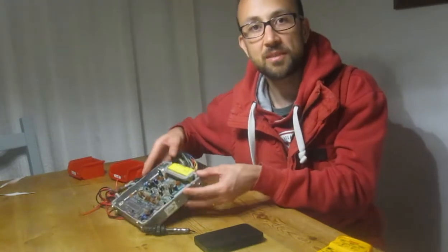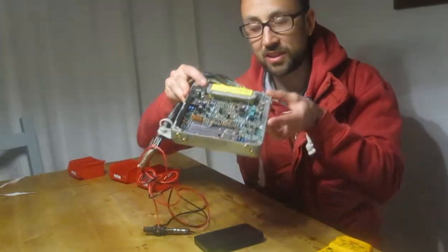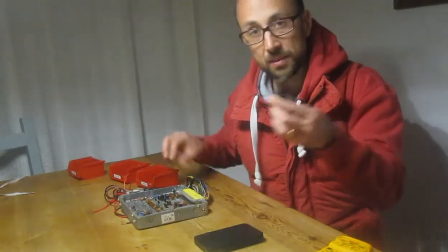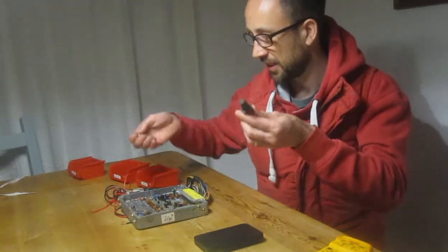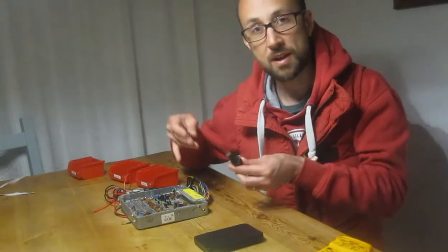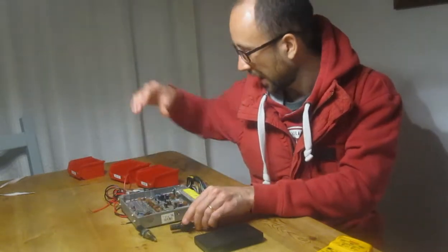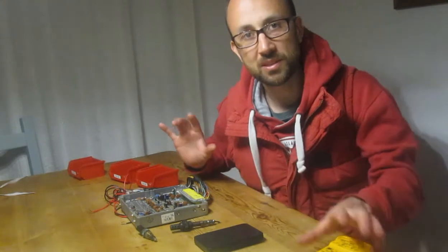So this is a Mark 1 MX-5 ECU that I've got here, and here's a couple of sensors that plug into the wiring loom and are read by the module, and a few other bits to help demonstrate my explanation.